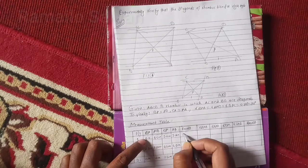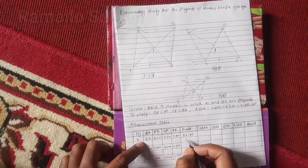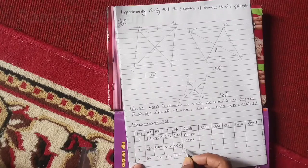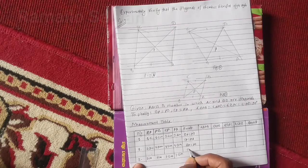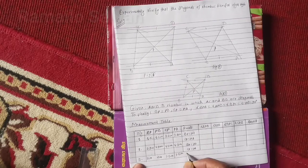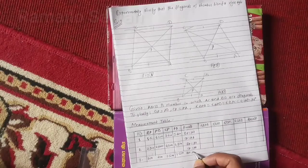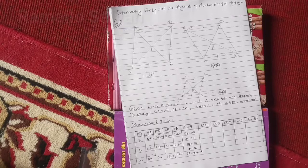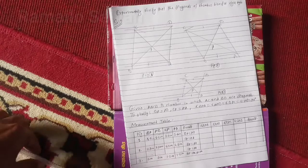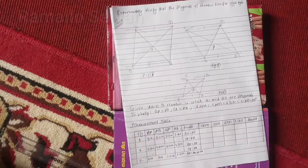That means length of BP equals length of PD, and length of CP equals length of PA across all three figures. This means the diagonals are bisected. Now it remains to show they bisect at right angles. Measure all angles using a protractor.